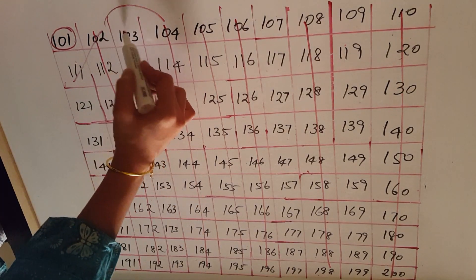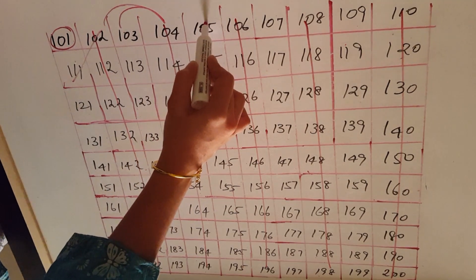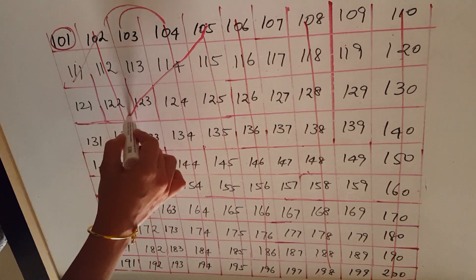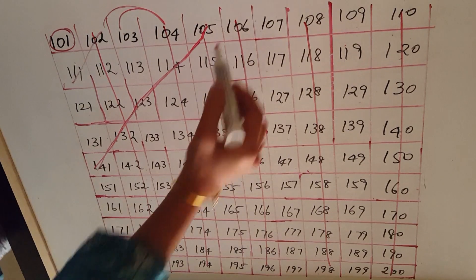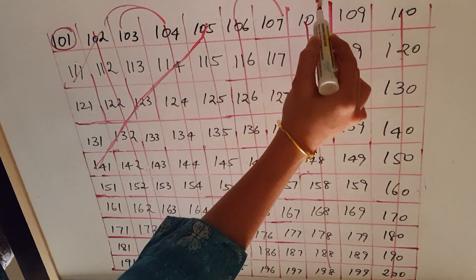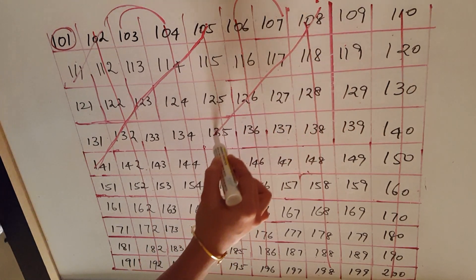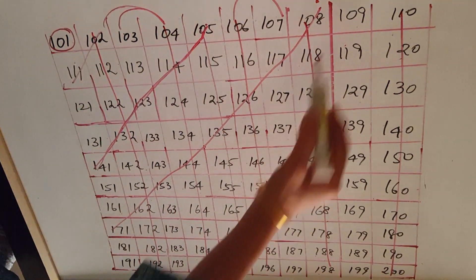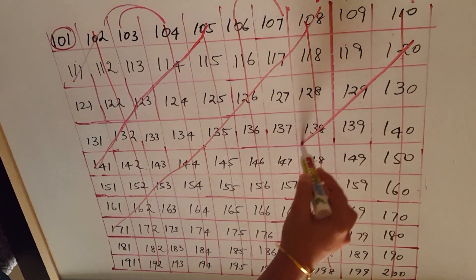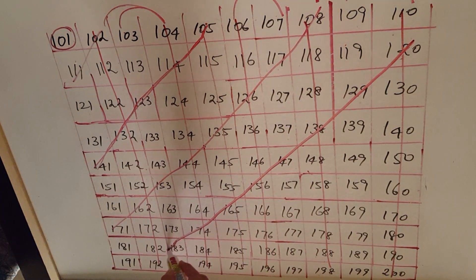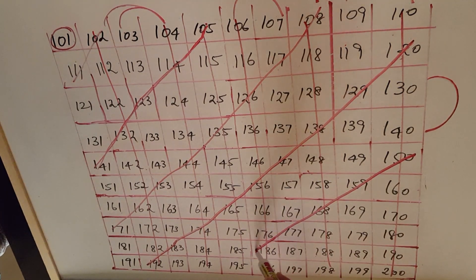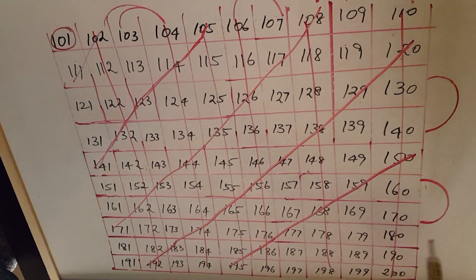For two-digit sum numbers, you leave those, then strike out in this column. After that you leave this two-digit group and go to this one. Then you go with this two: 129, 138, 147, 156, 165, 174, 183, 192 — strike these out. After that you go this one, leave two, then go with 168, 167, 186, 195 — leave two, go with two, then three.